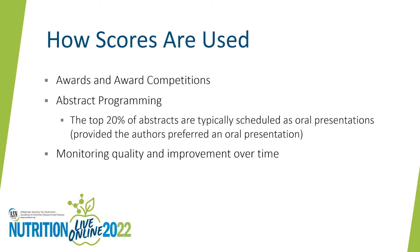Abstract scores are used in the following ways. An abstract's average score can qualify an author to receive an award or to compete in an awards competition. Typically, the top 20% of abstracts are scheduled into oral presentations, provided the authors indicated a preference for an oral presentation. Abstract scores are also used to monitor quality and improvement over time. Since abstract scores will be used to determine awards and programming, please try to use the full range of scores — it doesn't help much when every abstract is given the same score.